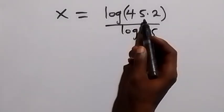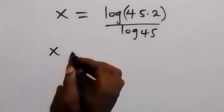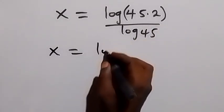We apply the law of logarithm. When we have multiplication, we can separate into two logs: log 45 and log 2.